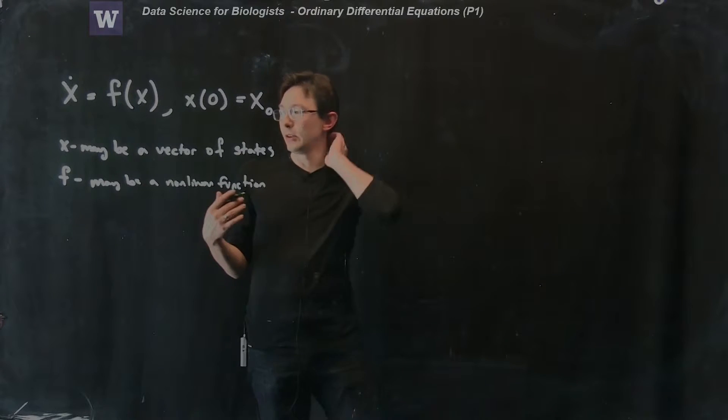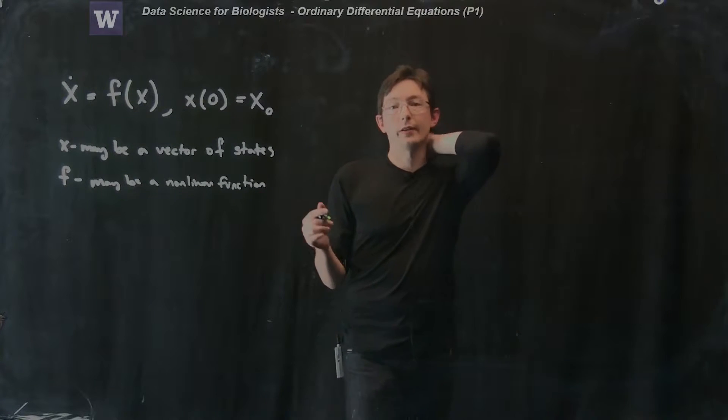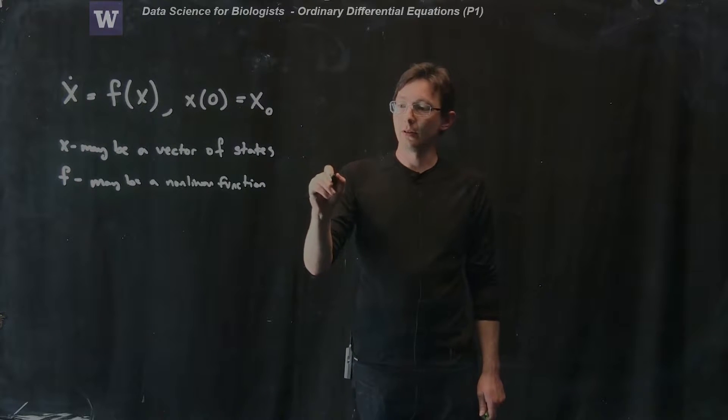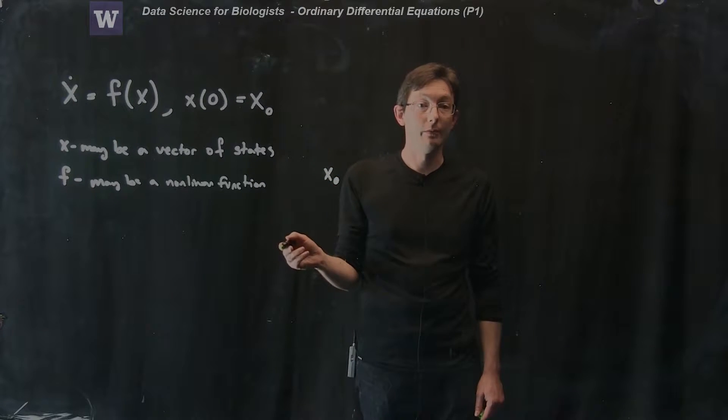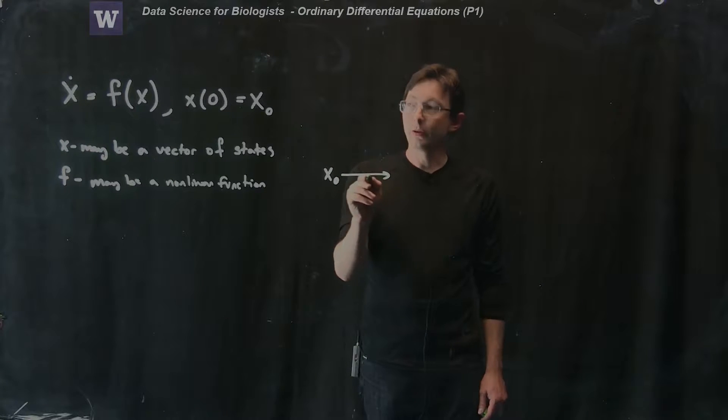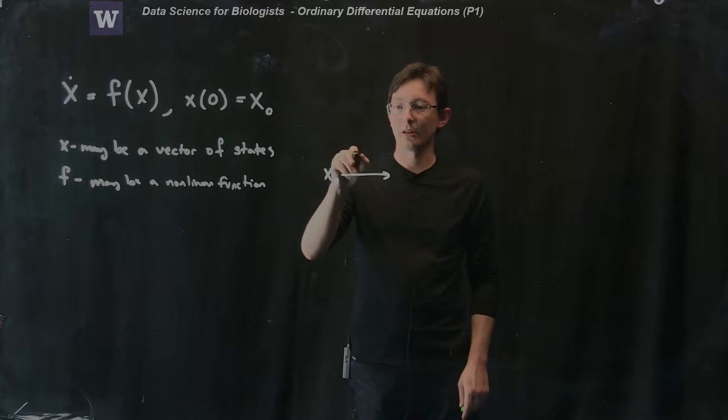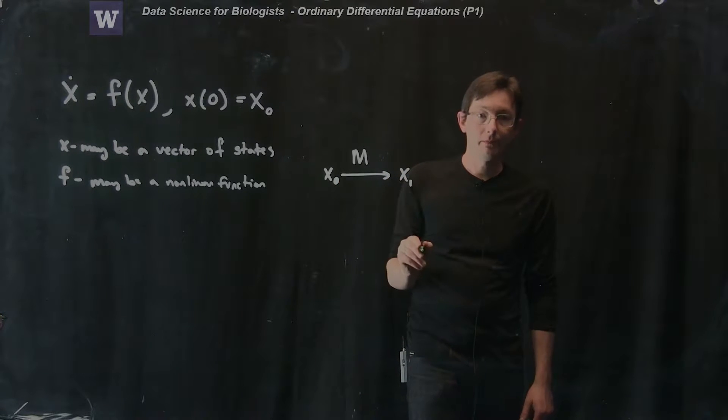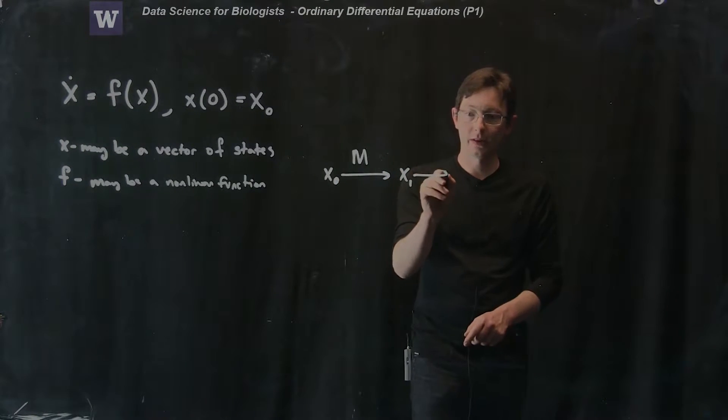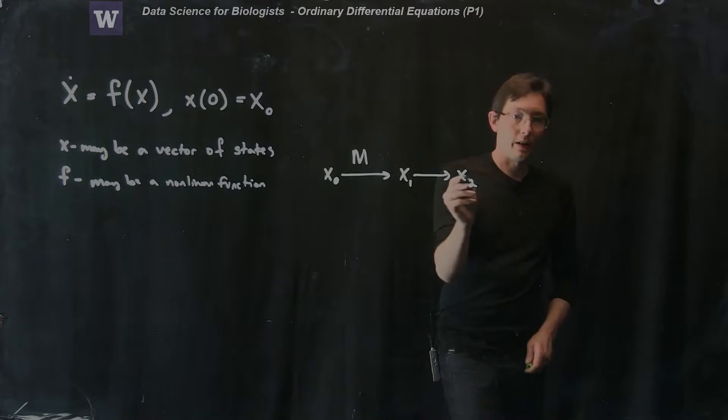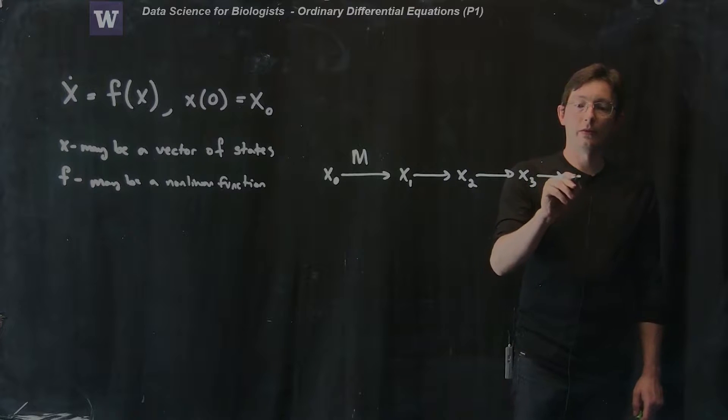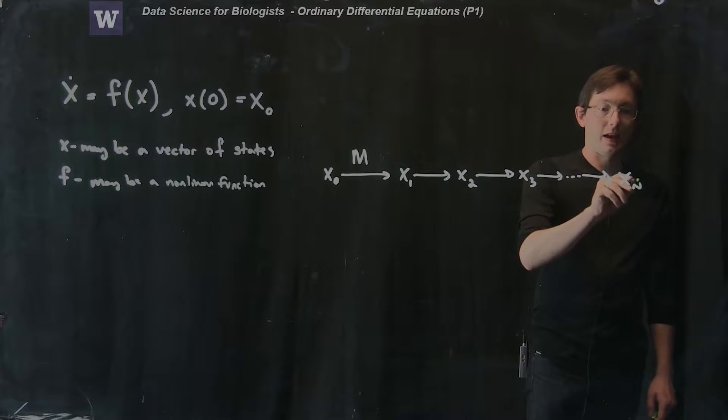And what we're going to do here is essentially try to find some kind of an iteration so that if I give you x at time 0 you can define some iteration, I'm going to call this m, some map m such that x naught goes to x1, and now that you have x1 we want to go to x2, and now that you have x2 we want to be able to go to x3 and so on and so forth all the way up to x_n.